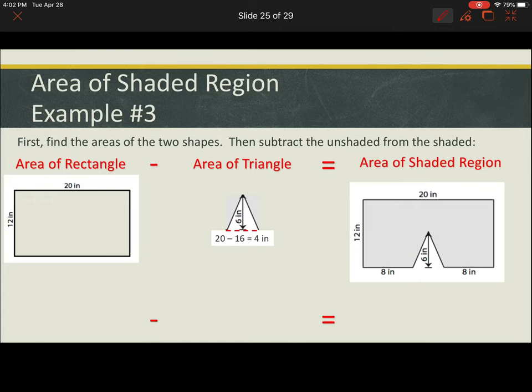From there, it's just like any of the others. We find the area of the rectangle using base times height to be 240 inches squared. The area of the triangle, again one-half base times height using the base that we just calculated, and we have an area of 12 inches squared.